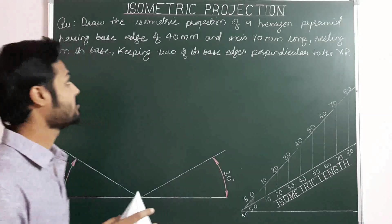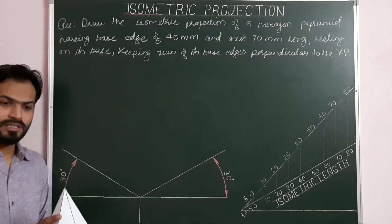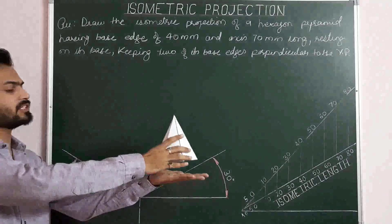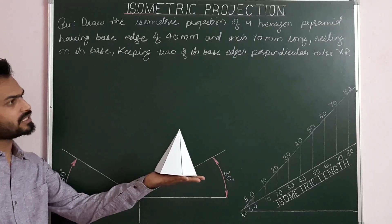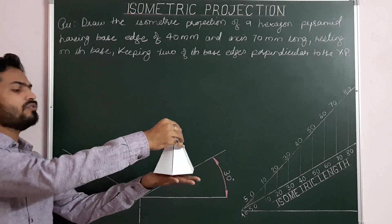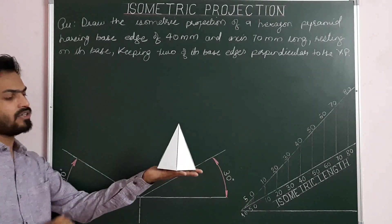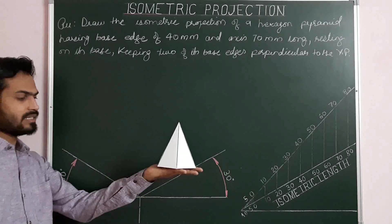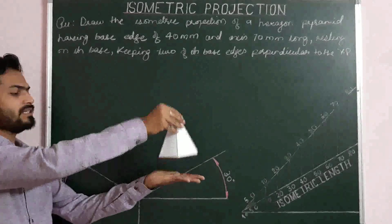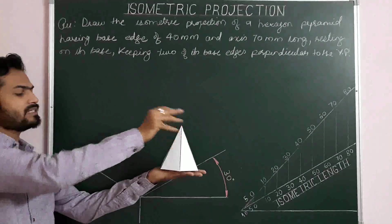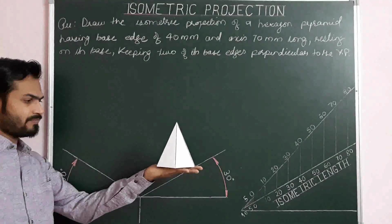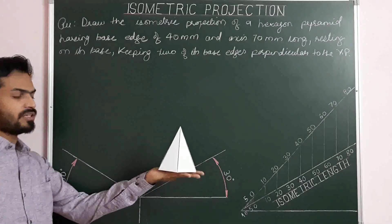Coming to the other constraint: the solid is resting on its base, so the hexagonal pyramid is resting on its base on the HP, keeping two of its base edges perpendicular to the VP. This means two of its base sides — opposite sides of its base — are both perpendicular to the VP. So this is the final position: the solid resting on its base with two opposite parallel sides perpendicular to the VP, and we have to draw the isometric projection in this position.